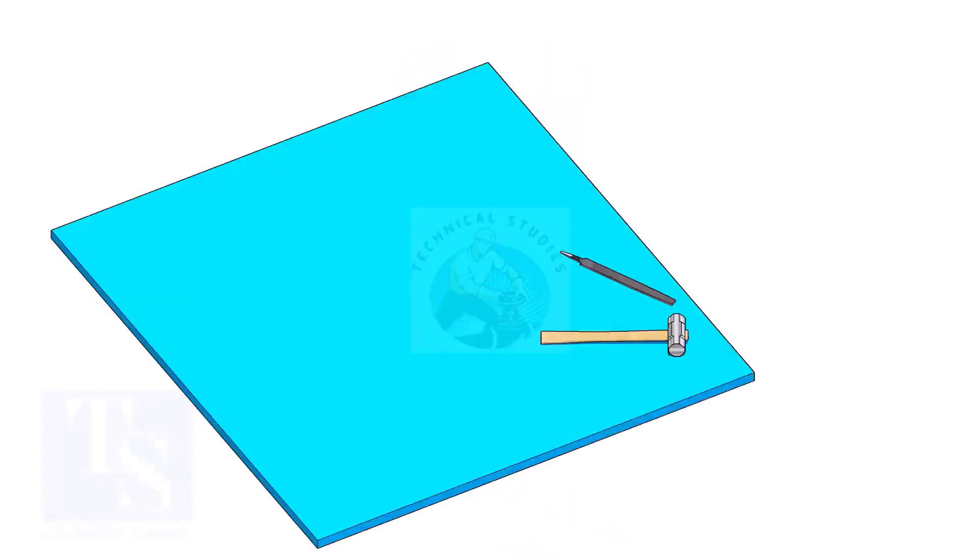The flange face may get damaged during fabrication. Use a non-metallic sheet like a Teflon sheet, thin hardboard, or piece of CNAF gasket sheet, as shown in the video.